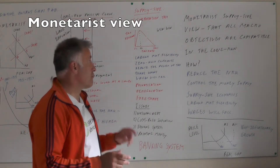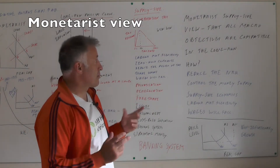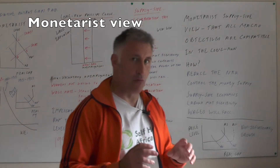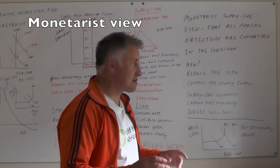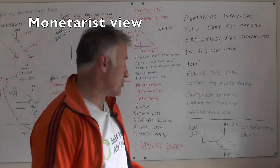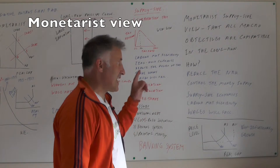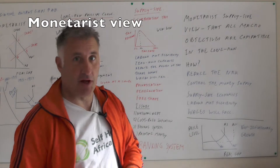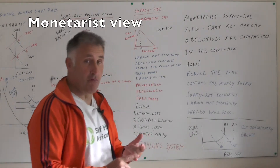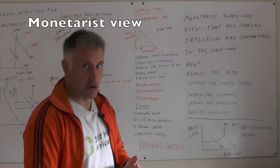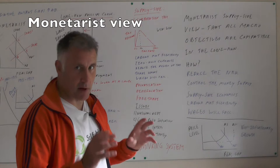If you take the supply-side view, monetarists believe that in the long run all macro objectives are compatible — you can achieve low unemployment, price stability, high economic growth, and a balance of payments equilibrium. Monetarists believe in the long-run Phillips curve being vertical; they believe you control the money supply to control inflation, and at all times use supply-side economics to create labour market flexibility.